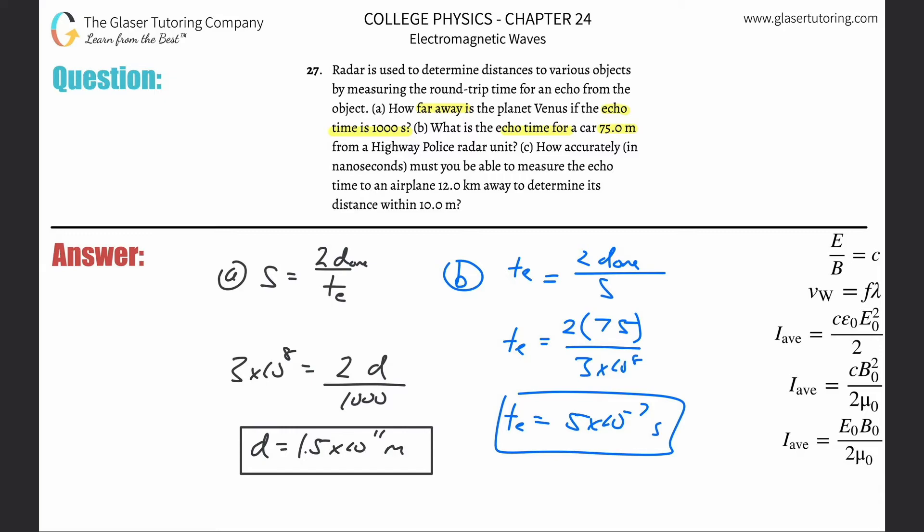So letter C: How accurately in nanoseconds must you be able to measure the echo time of an airplane 12 kilometers away to determine its distance within 10 meters? So why don't we start with our formula?